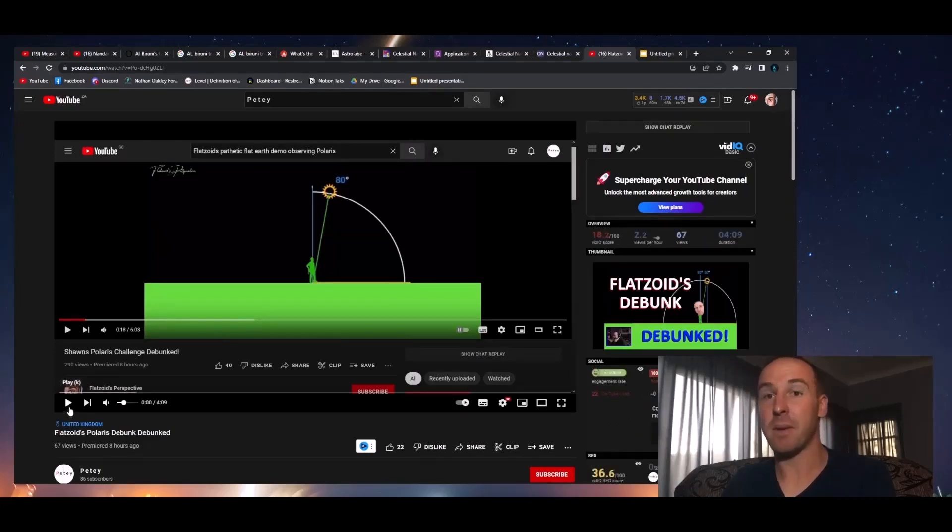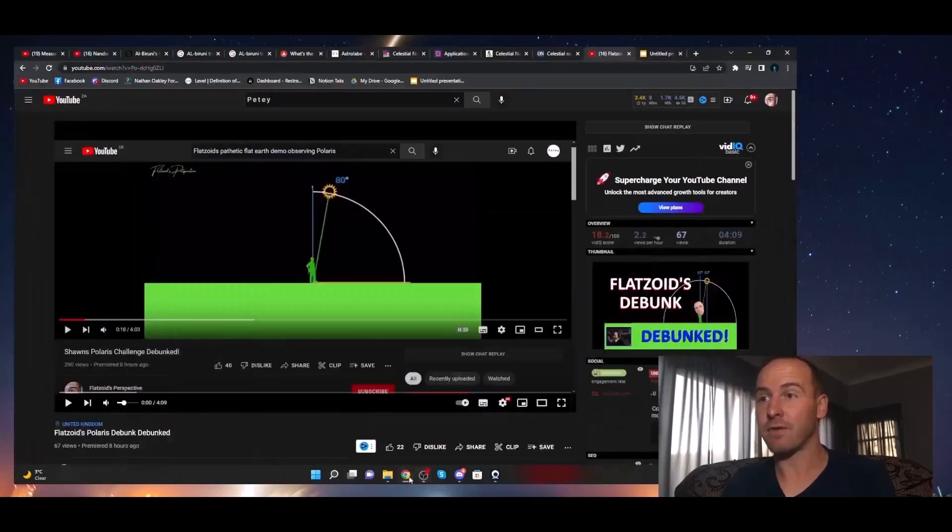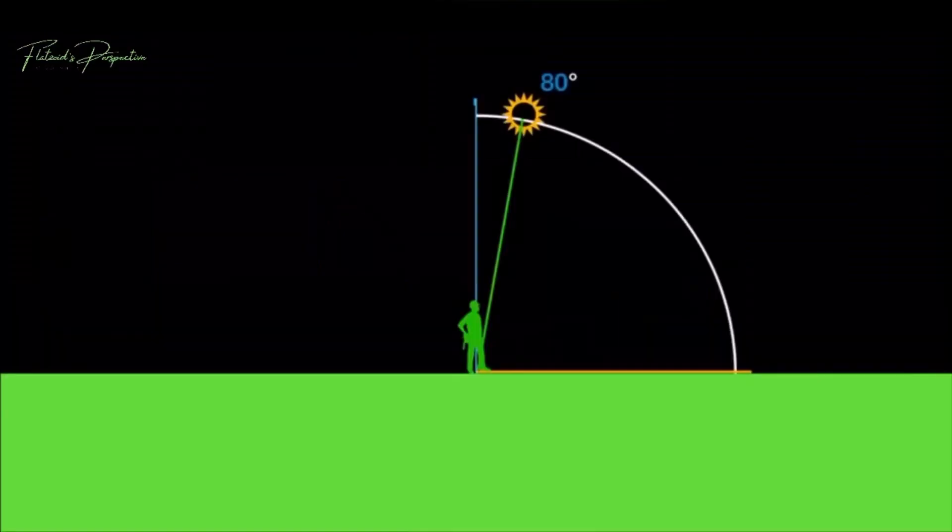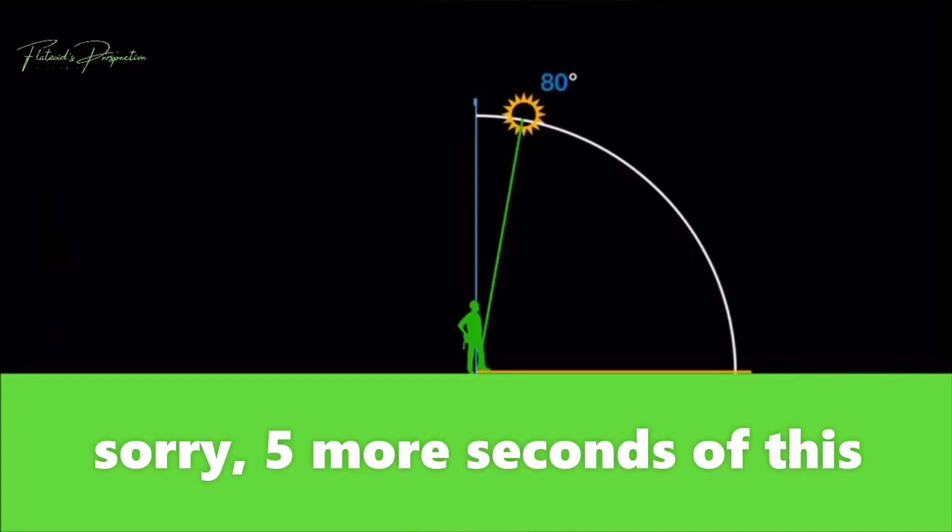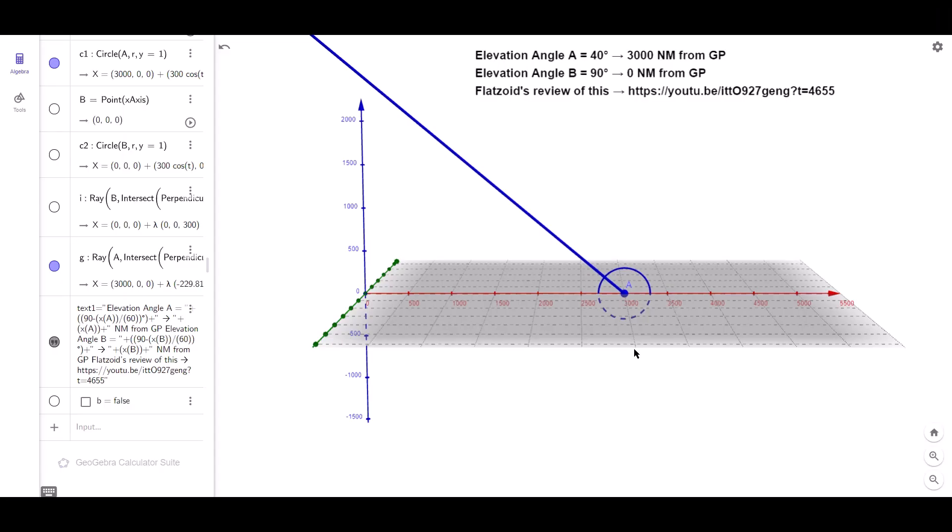This should be interesting. He's saying he's debunking me. This is why we use the man standing still and the luminary moving over the arc, because it's not us moving, it's the luminary moving. This is 80 degrees. Look at the altitude relationship compared to the distance: 80 degrees, 70 degrees, 60 degrees.